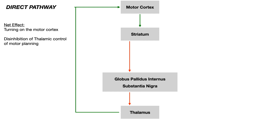The net effect of the direct pathway is to turn on the motor cortex — really what's happening is you're disinhibiting thalamic control of motor planning. The basal ganglia's role is to coordinate and plan motor movement. The thalamus, as the sensory integration center, communicates with the motor cortex, which is responsible for yielding motor output. It's through this loop that the direct pathway initiates movement.